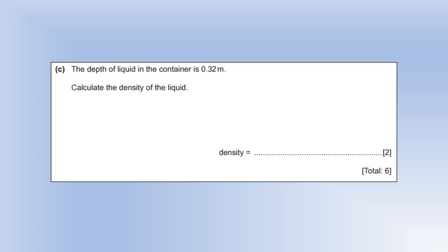So the depth of the liquid in the container is 0.32 meters. Calculate the density of the liquid. Well, density is mass divided by volume. We know the mass is 4.8 kilograms. And we now can calculate the volume by multiplying the three dimensions together. That comes out as a number 781. But the values here are all two significant figures. So we'd give it a 780 kilograms per meter cubed.